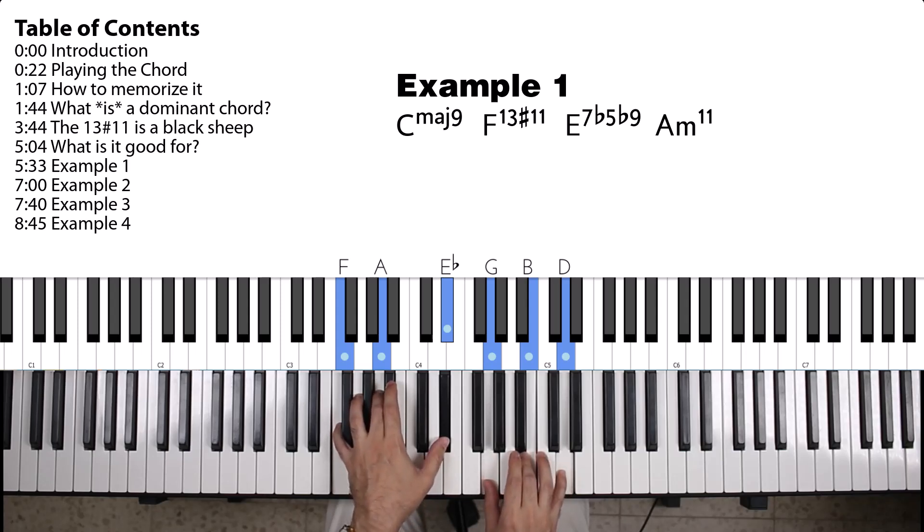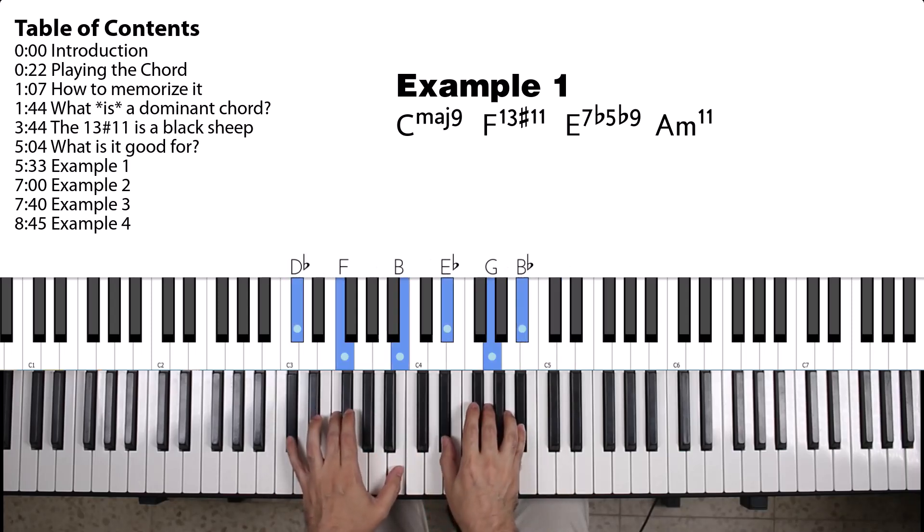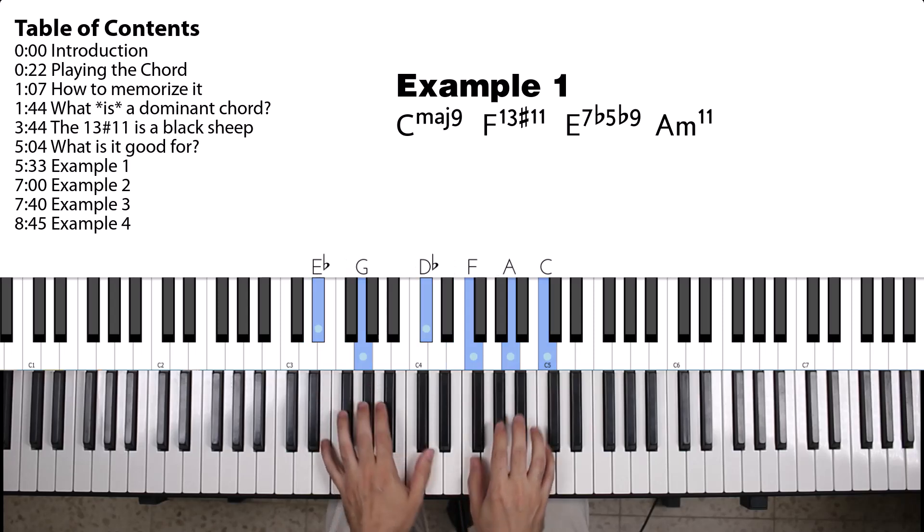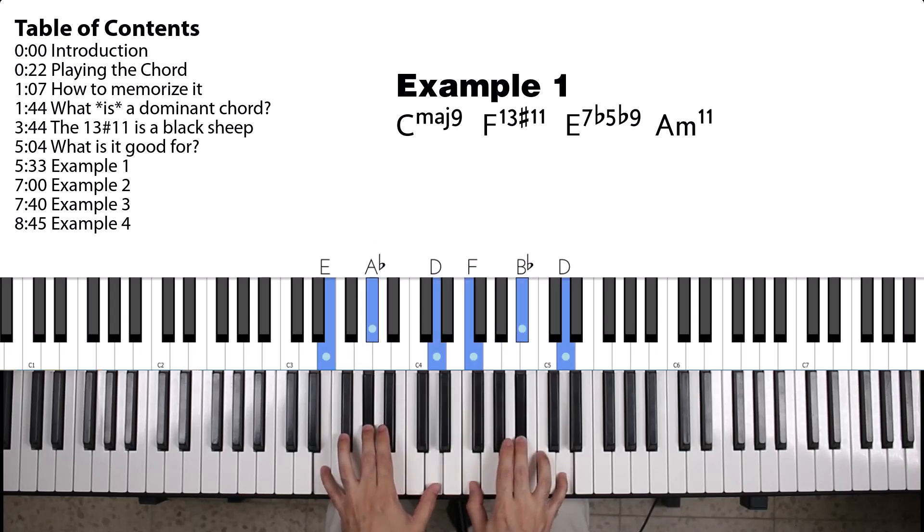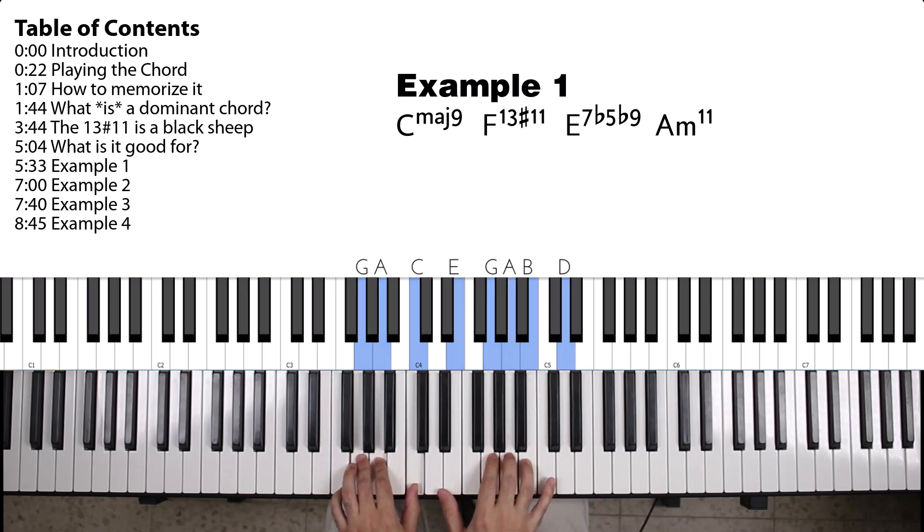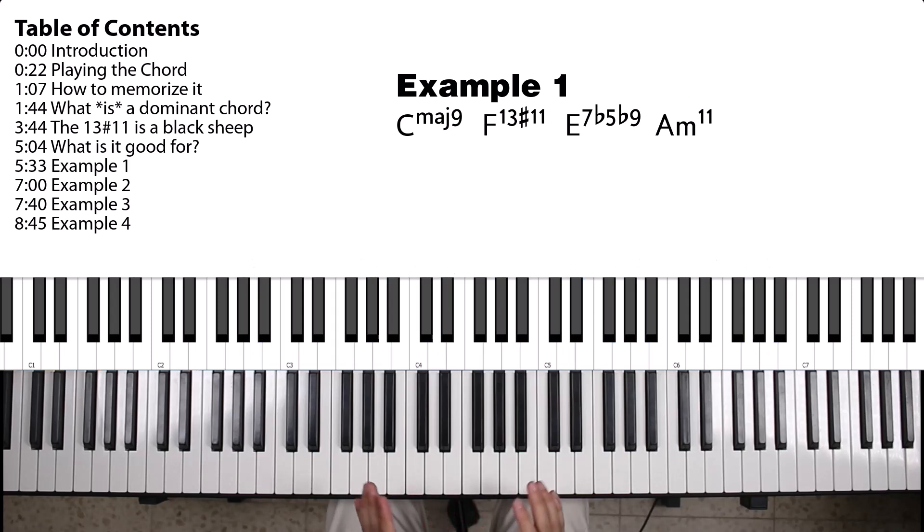So if you take a C and you start sort of climbing up, you get this voicing for the F. And this F leads quite nicely into the E dominant 7. So, this is the kind of chromatic motion that these 13 sharp 11 chords really lend themselves to.